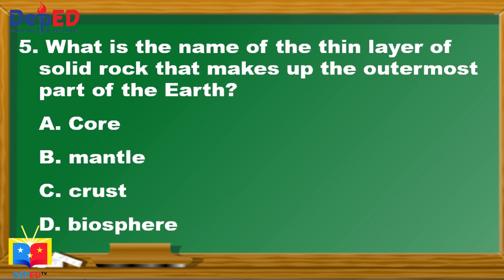Number five: What is the name of the thin layer of solid rock that makes up the outermost part of the Earth? A. Core, B. Mantle, C. Crust, or D. Biosphere.